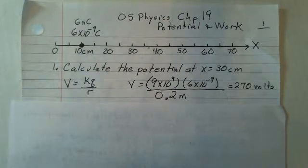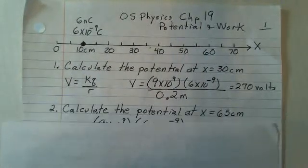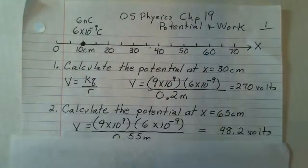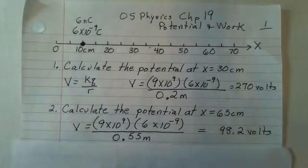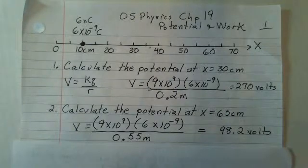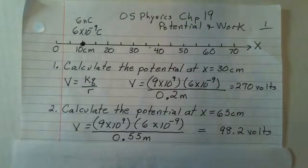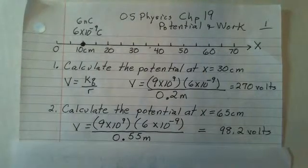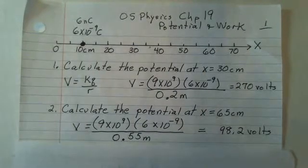So that calculation is 270 volts. And then what's the potential at 65 centimeters? Well, similar calculation. What changes is the R. 65 centimeters is 55 centimeters away from the charge that's located at 10 centimeters. So our R value is 0.55 and our voltage is smaller as our distance is larger than before.